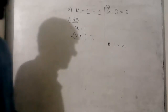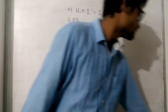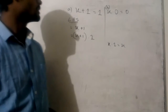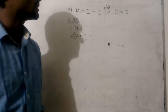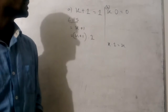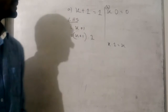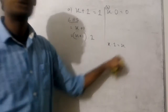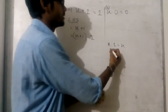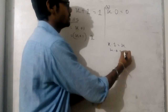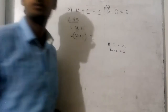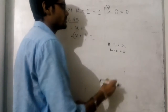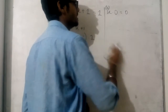You can see the postulates — variable into 1 equals variable, and variable into 0 equals 0. These rules are in our postulates.